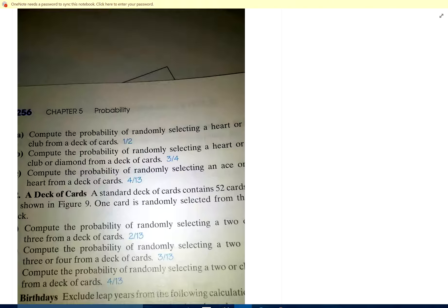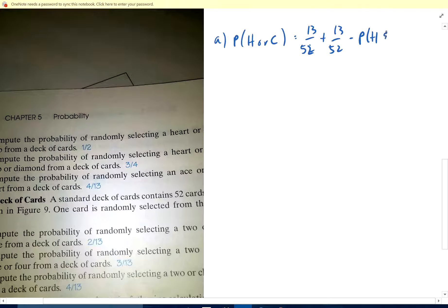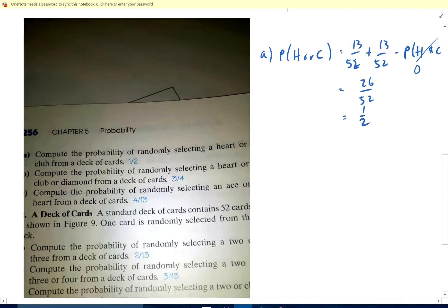Okay, a deck of cards, standard deck, 52 cards. Compute the probability of randomly selecting a heart or a club. A heart or a club is 13 over 52 plus 13 over 52 minus the probability of a heart and a club. Well, you can't pick a heart and a club, so that's zero. So this is 26 over 52, which is one half.